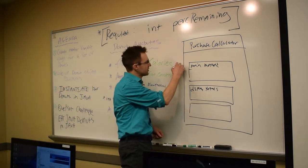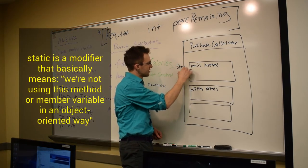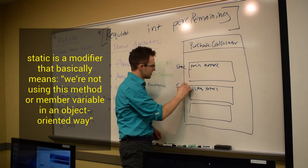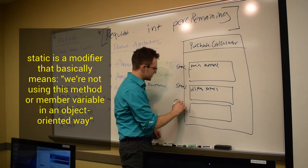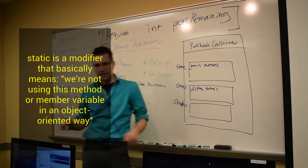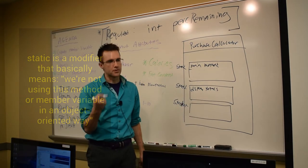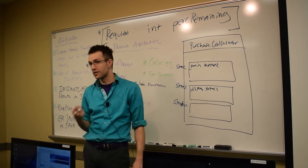Each of these methods were declared to be static. And we can think of static as meaning there will only be, or we will never turn this class into an object.